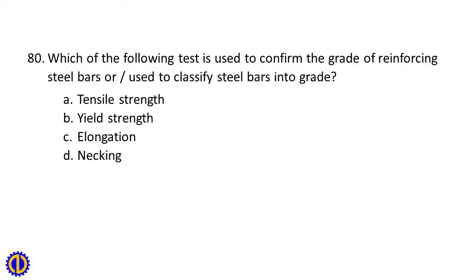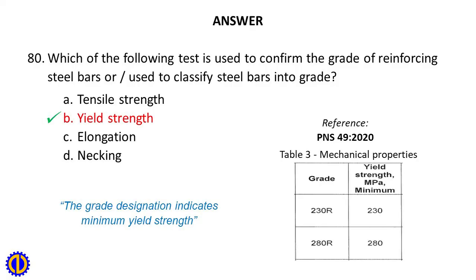Question 80. Which of the following tests is used to confirm the grade of reinforcing steel bars, or used to classify steel bars into grade? A. Tensile strength, B. Yield strength, C. Elongation, D. Necking. Answer: B. Yield strength. The grade designation indicates minimum yield strength. Reference: PNS 49:2020, Table 3, Mechanical Properties.